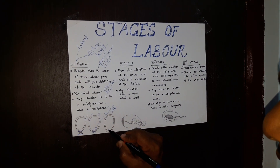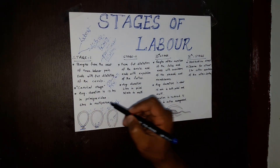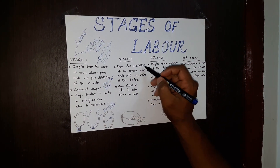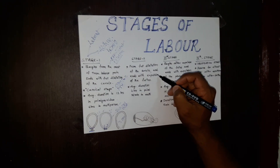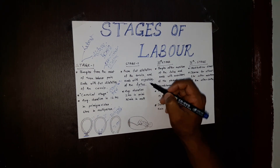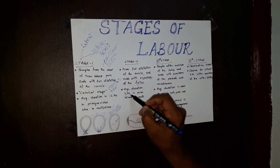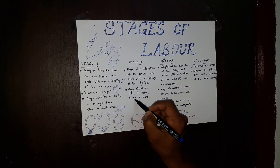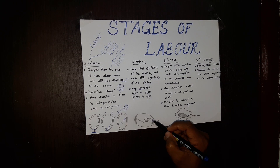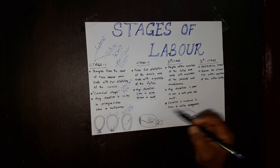This shows complete 10 cm dilatation, and that is about Stage 1. Coming to Stage 2, this stage begins from the full dilatation of the cervix and ends with the expulsion of the fetus — that is, delivery of the fetus. The duration is about 2 hours in primigravida and 30 minutes in multigravida.